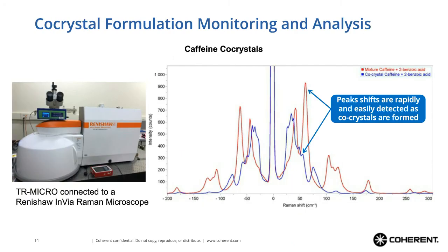Another application is looking at co-crystal formation. Any time the structural form changes by formation or breaking of a co-crystal bond, you will see a corresponding change in the low-frequency region spectrum. Whenever you add complexity to the molecule, you tend to increase the number of low-frequency bands and they tend to move closer to the laser line. Here, the red curve shows a physical mixture of caffeine and two-benzoic acid, while the blue curve shows what happens when the co-crystal bond forms between the two — making it very easy to identify when the desired reaction is actually occurring.